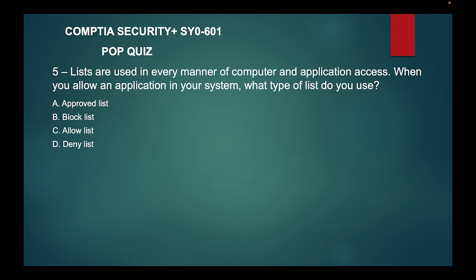Question five: lists are used in every manner of computer and application access. When you allow an application in your system, what type of list do you use? Is it a) approved list, b) block list, c) allow list, or d) deny list?